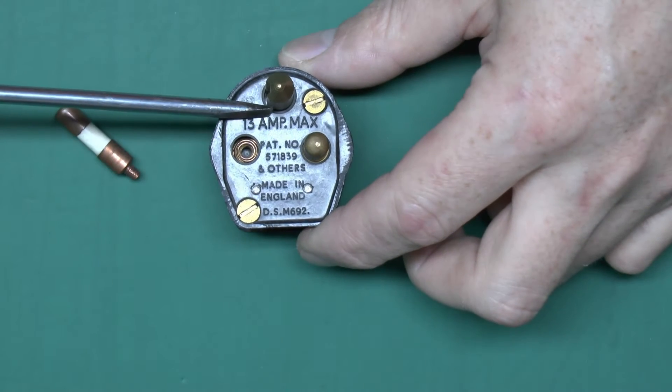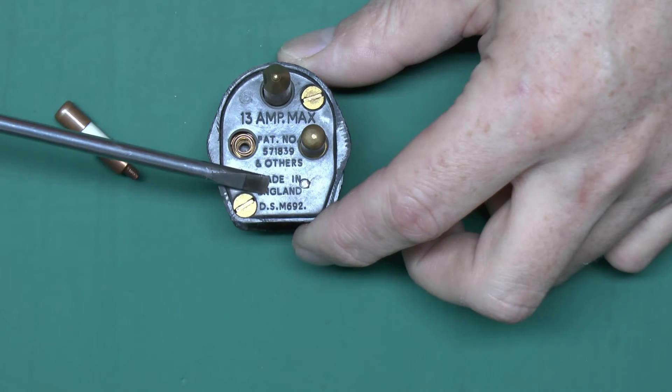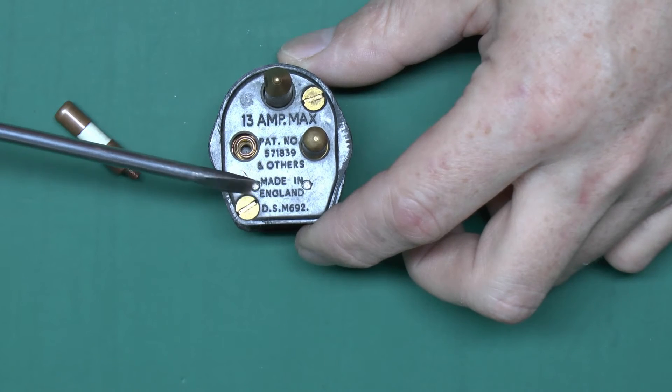Now, here's the plug itself, as you can see it says 13 amp maximum, pattern number there, made in England, and the model number of this one is a M692 DS for Dorman Smith.